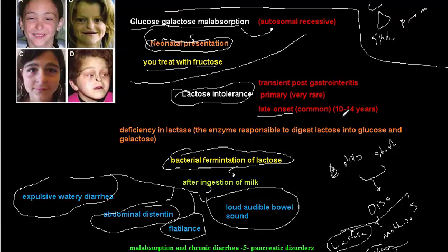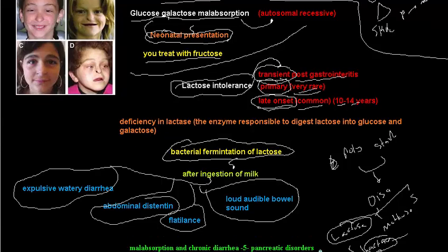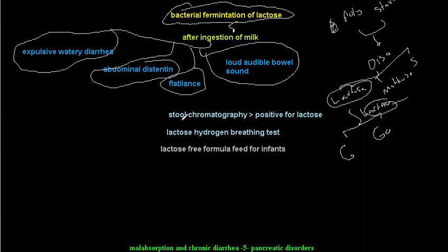Lactase deficiency is mostly a late-onset disease, occurring in children between 10 and 14 years. Primary lactase deficiency in neonates and infants is very rare. It may also be transient — for example, post-gastroenteritis lactase deficiency or following cow's milk protein allergy — which is temporary, not permanent.